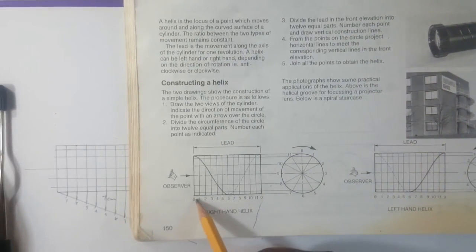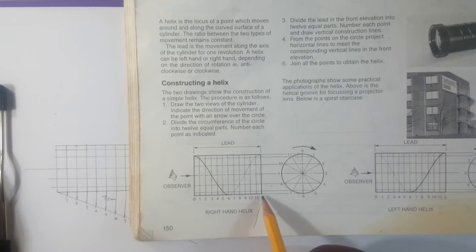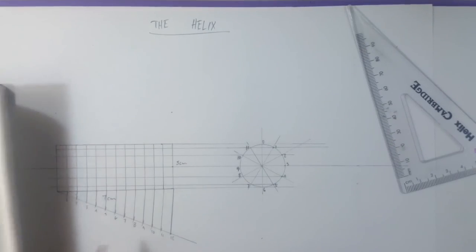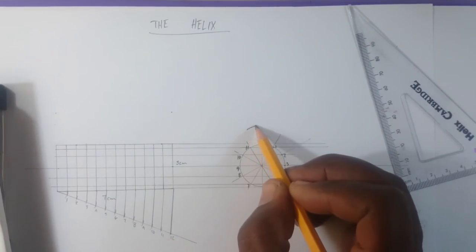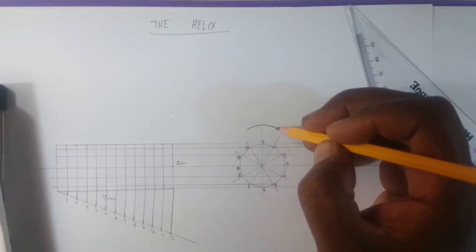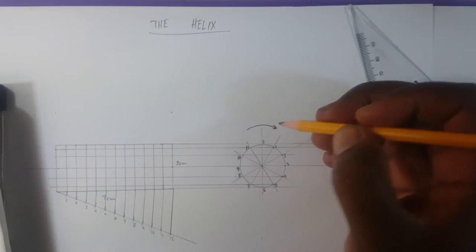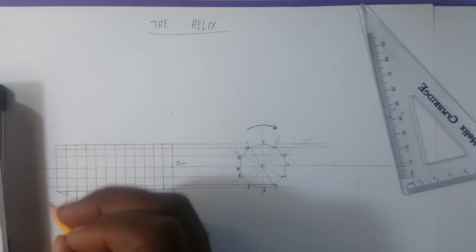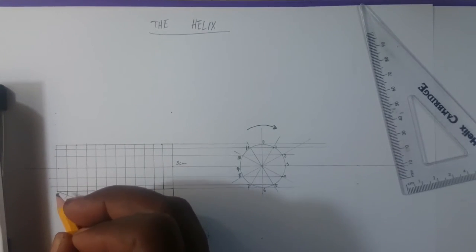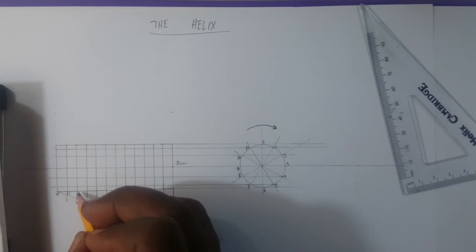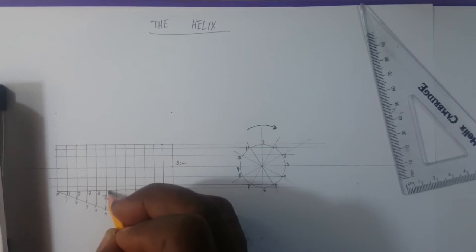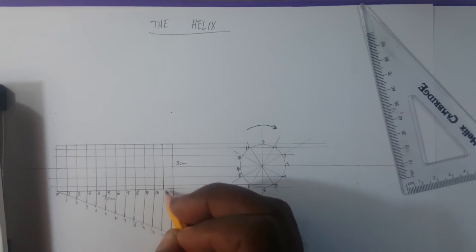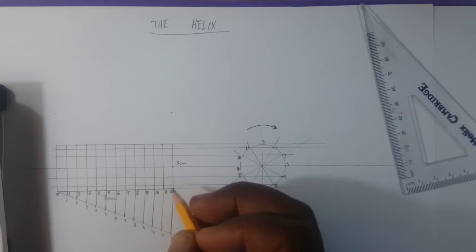The lead is divided: starting at 0 and going right up to 12. That is the lead. Draw your arrow showing the direction the helix will turn — clockwise. Label the divisions 0, 1, 2, 3, 4, 5, 6, 7, 8, 9, 10, 11, and 0 again at the end.